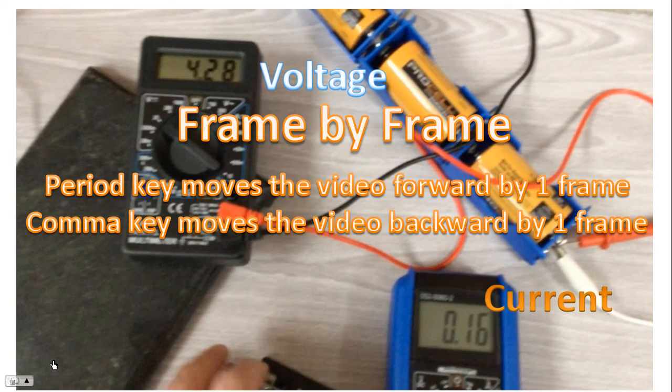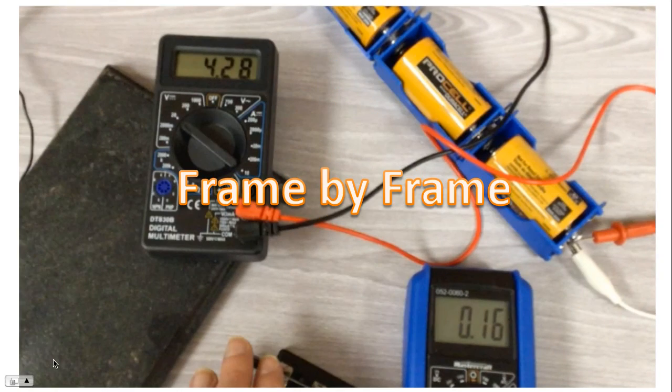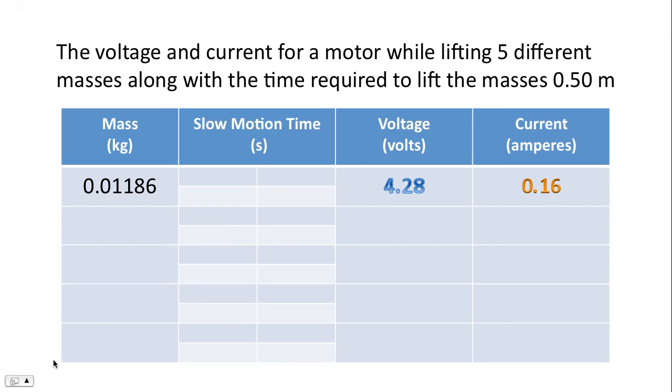When you play the video frame by frame, you'll notice that the most consistent voltage is 4.28 volts. And the most consistent current is 0.16 amps. So for your first data point, after playing that video frame by frame, that's what you should come up with for voltage and current. So there's the first row of data filled out for you. Of course, you should also complete the four slow motion trial times.